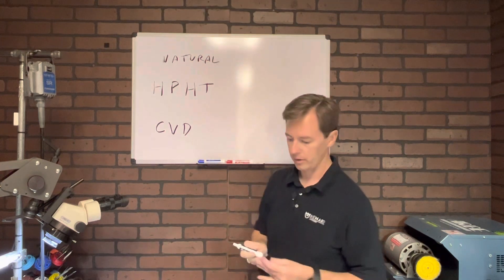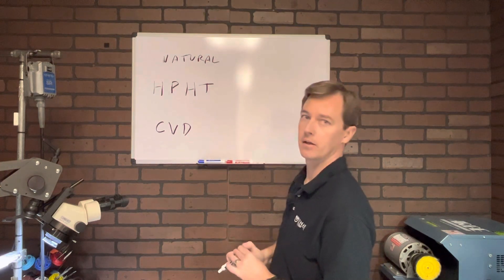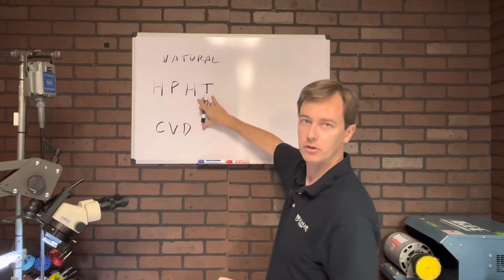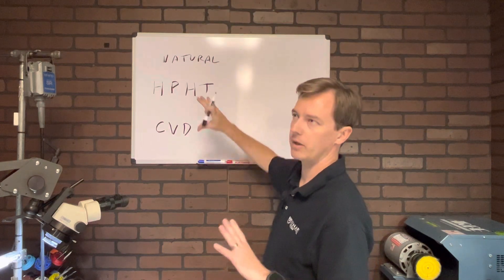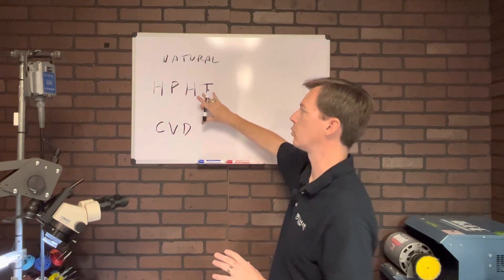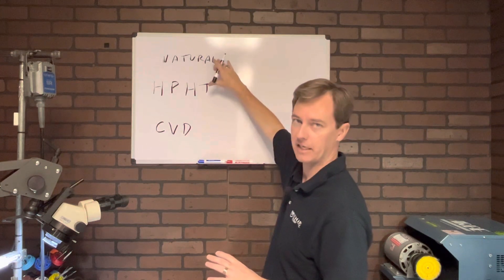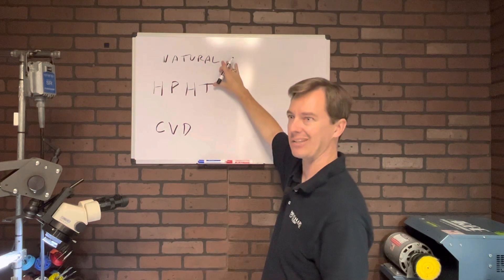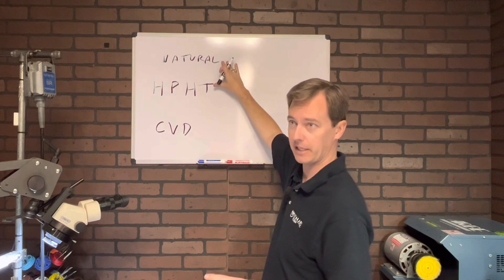So these two right here are your main two ways and there's equipment that costs thousands of dollars to test whether it's one of these or one of these. It tests whether it's a type one or type two diamond. That's all the equipment in your average jewelry store is going to test for.